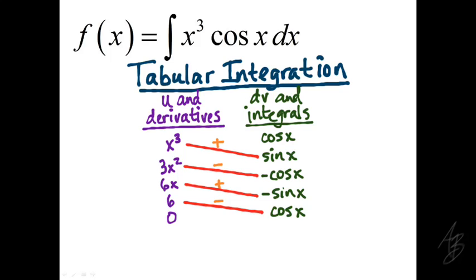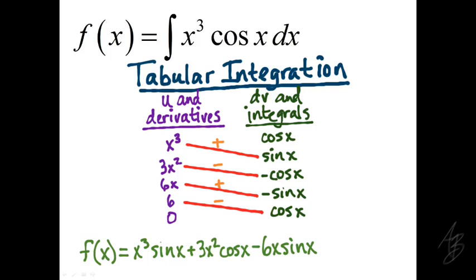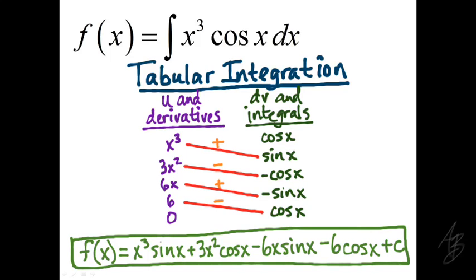From here it's straightforward to get our answer. We take x cubed times sine of x for the first term. Then we subtract 3x squared times negative cosine of x — the two negatives cancel — giving plus 3x squared cosine of x. Then we add 6x times negative sine of x, giving minus 6x sine of x. Then we subtract 6 times cosine of x, giving minus 6 cosine of x, plus the constant of integration C. We get the same answer in much less work. This tabular integration process is especially useful any time we have to use integration by parts more than once.